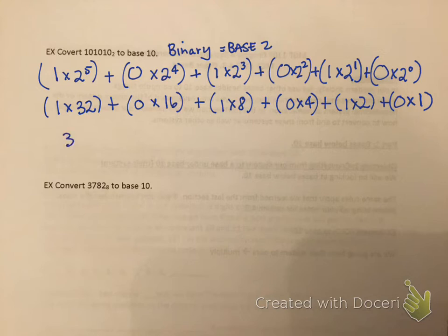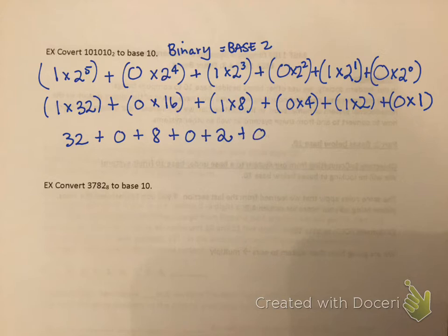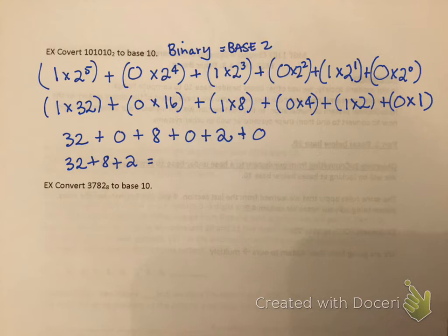1 times 32 is 32, plus 0 times 16 is 0, plus 1 times 8 is 8, plus 0 times 4 is 0, plus 1 times 2 is 2, plus 0 times 1 is 0. I basically have to add 32 plus 8 plus 2, and the grand total is 42. Let me go ahead and highlight that.